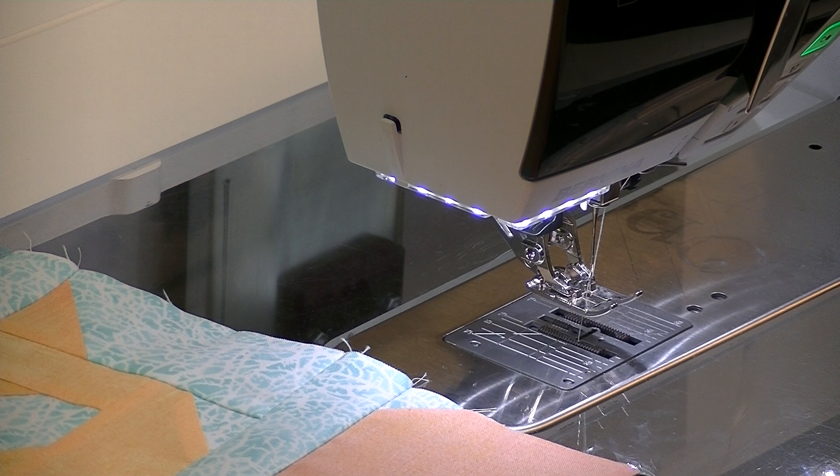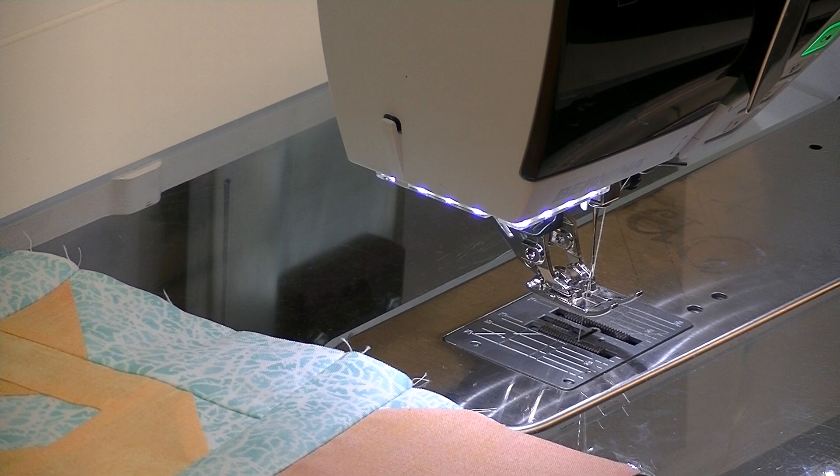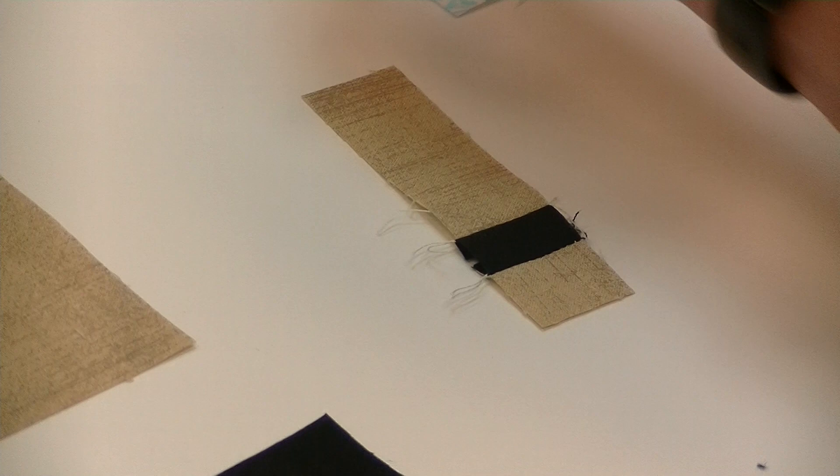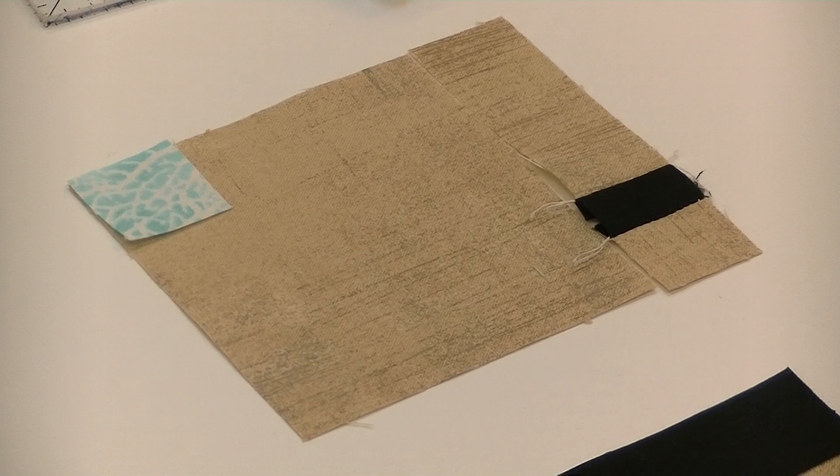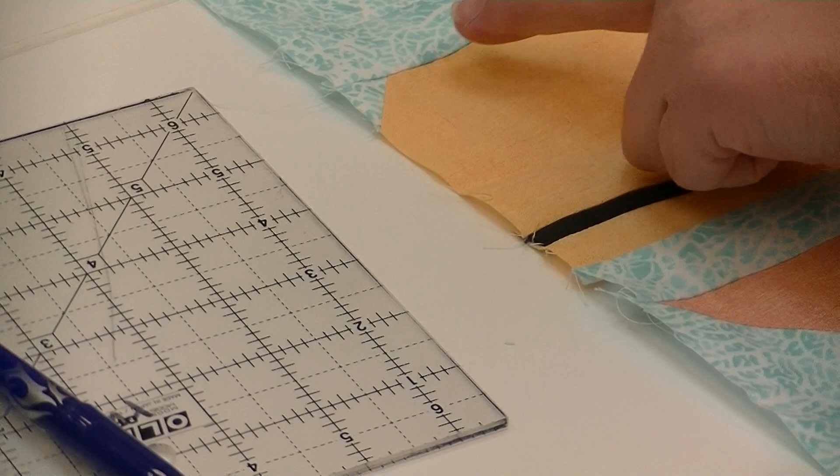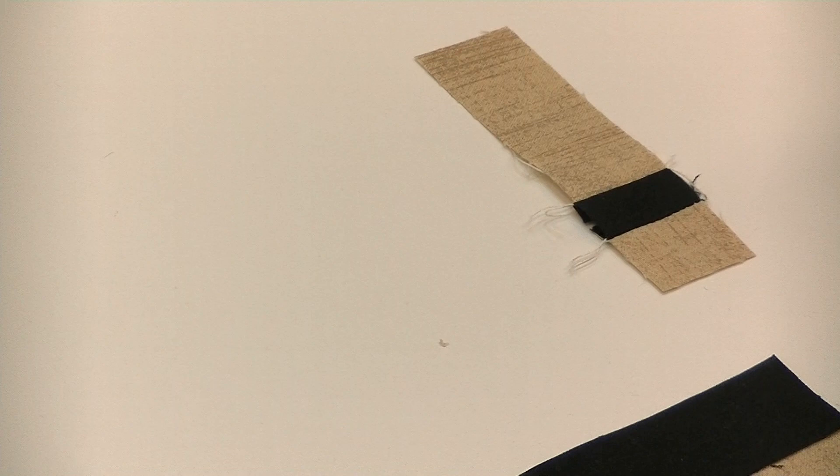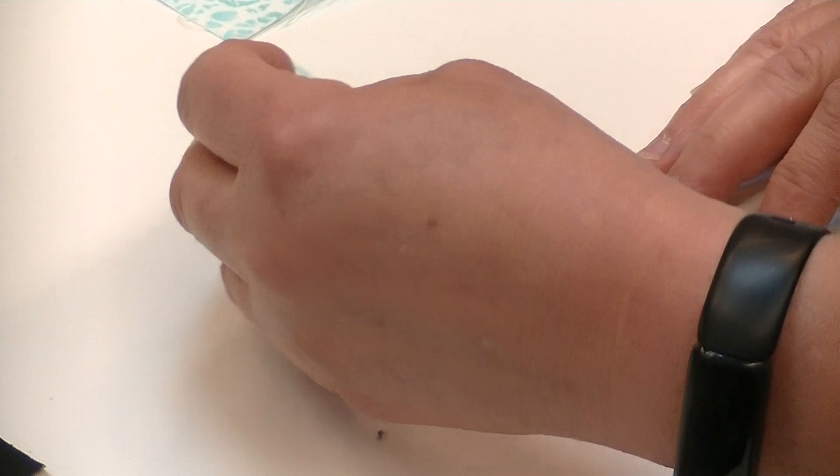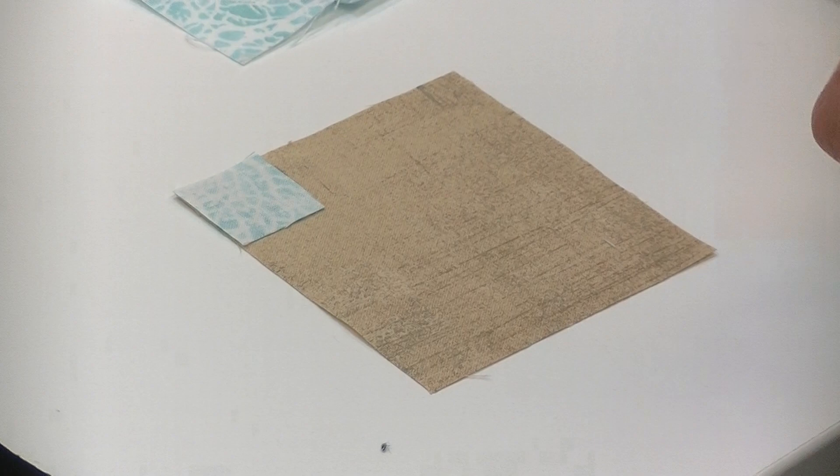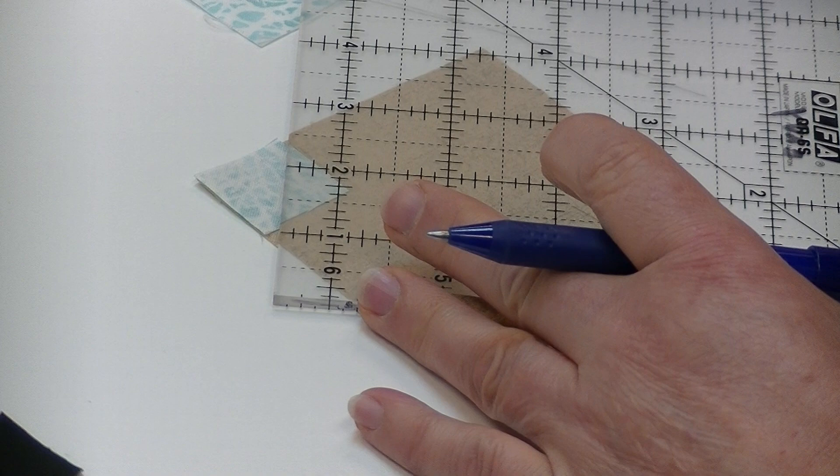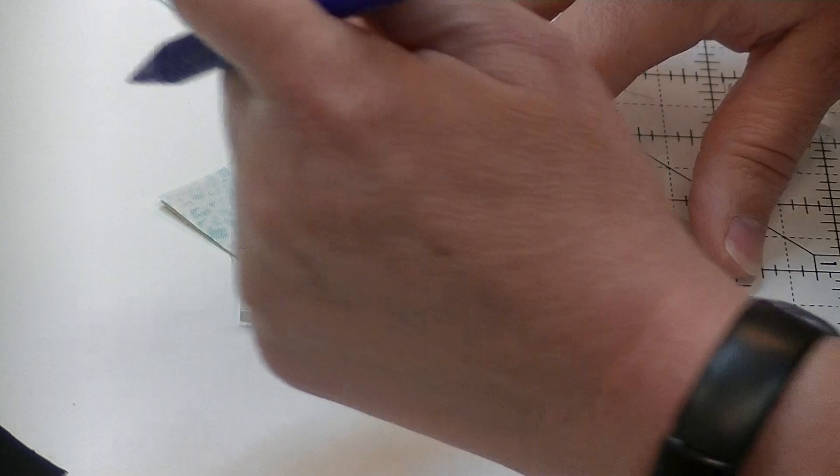Now what we need to do is we need to create his kind of nose, his little snout. What we're going to do is we're going to take a large square of the whale fabric and a small square of our background fabric and we're going to sew across the square diagonally. This is a typical Elizabeth Hartman move. She creates really all of her shapes by taking a square, drawing a line, stitching it, and then trimming away.